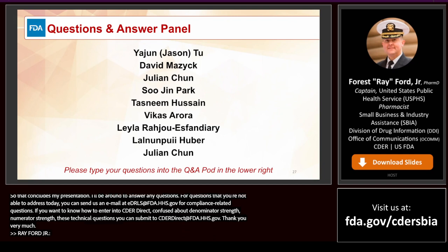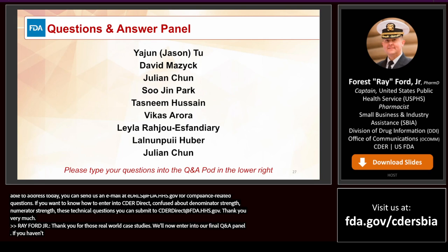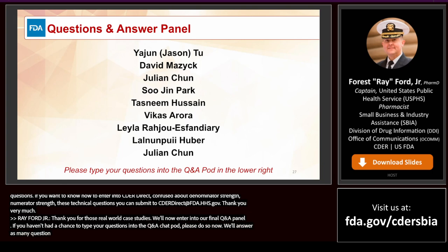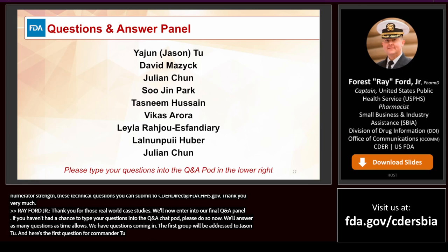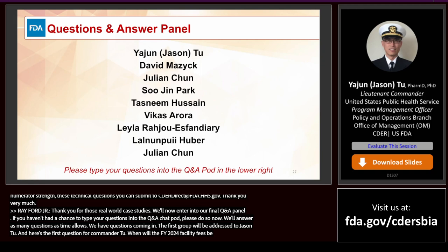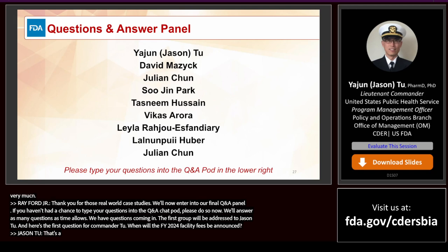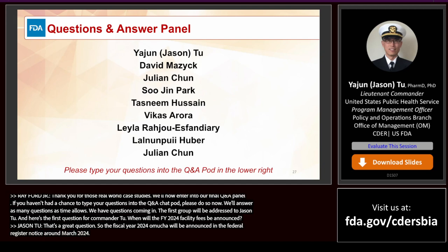Thank you for those real-world case studies. We'll now enter into our final Q&A panel. The first group of questions will be addressed to Lieutenant Commander Jason Two. Question: When will the FY 2024 facility fees be announced? The FY 2024 OMUFA facility user fee rates will be announced in the Federal Register notice around March 2024. We highly encourage visiting the OMUFA user fee website and subscribing to our listserv to receive the most up-to-date information.